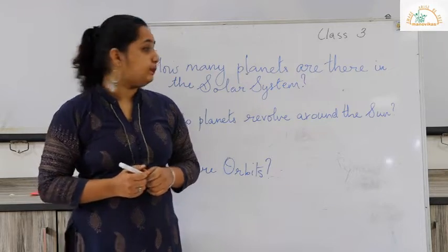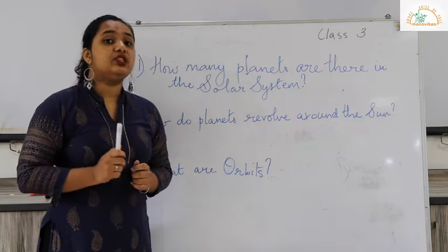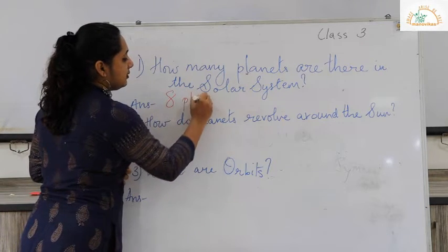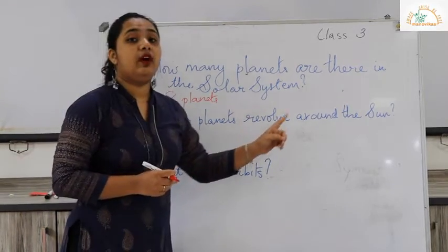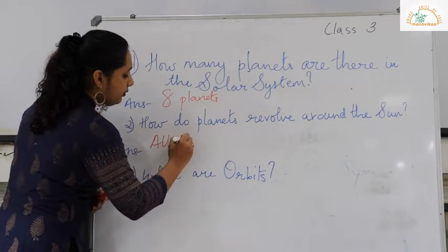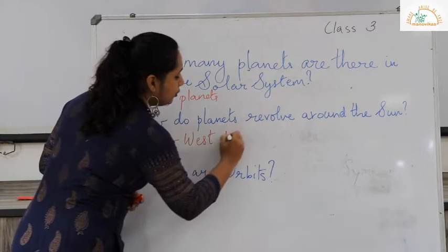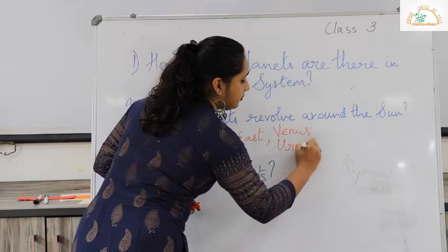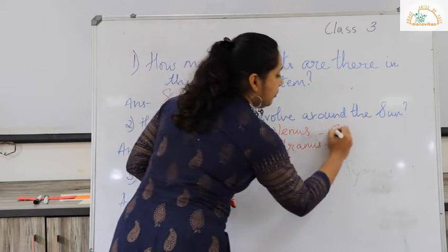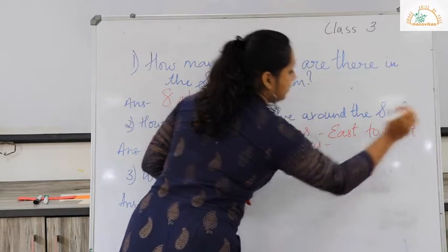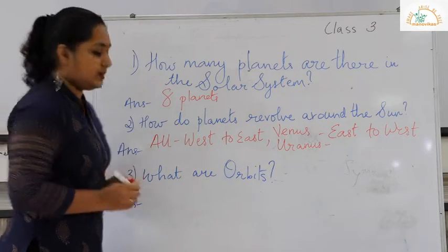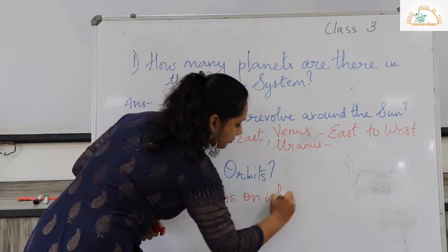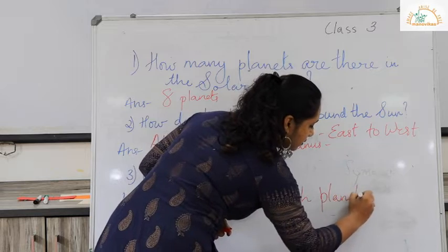Now let us revise the three important questions the teacher asked the students. First, how many planets are there in the solar system? Altogether, eight planets. Next question: how do planets revolve around the sun? All planets revolve from west to east, while Venus and Uranus revolve in the opposite direction, that is from east to west. And the last question: what are orbits? Orbits are fixed paths on which planets revolve.